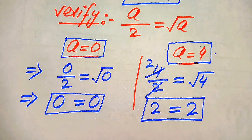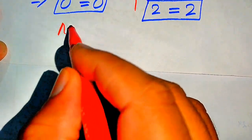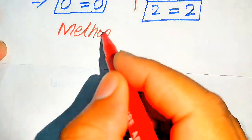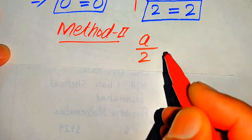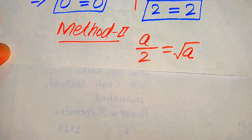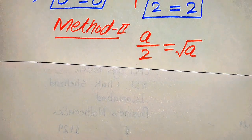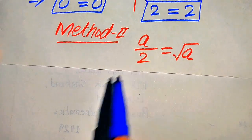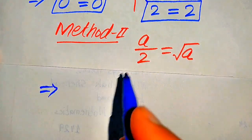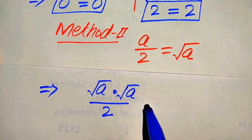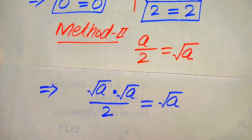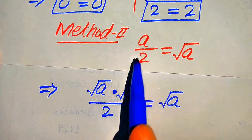Now we move to the second method. We again start with the given equation a/2 = √a. In the second method, we focus on the left-hand side: we rewrite a as √a multiplied by √a, so the equation becomes (√a · √a) / 2 = √a.